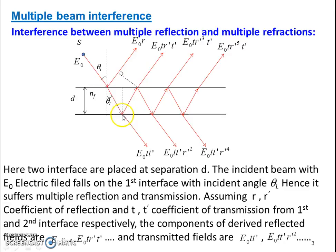When it is falling on the second interface, it will suffer again reflection and transmission both. So one path will go in this way and another path will transmit in this way. At this interface again it will suffer reflections and transmission both. This is the path of the reflections and this is the path of the transmissions.